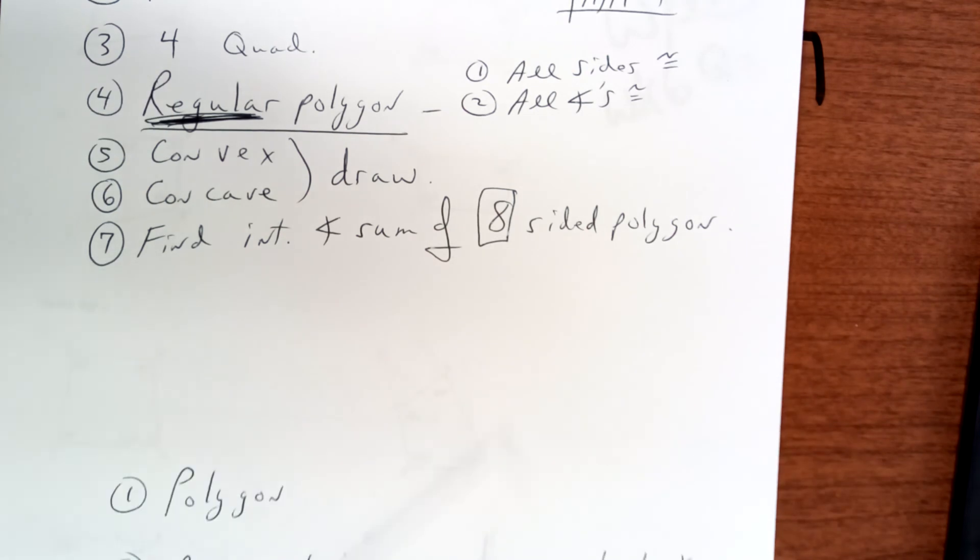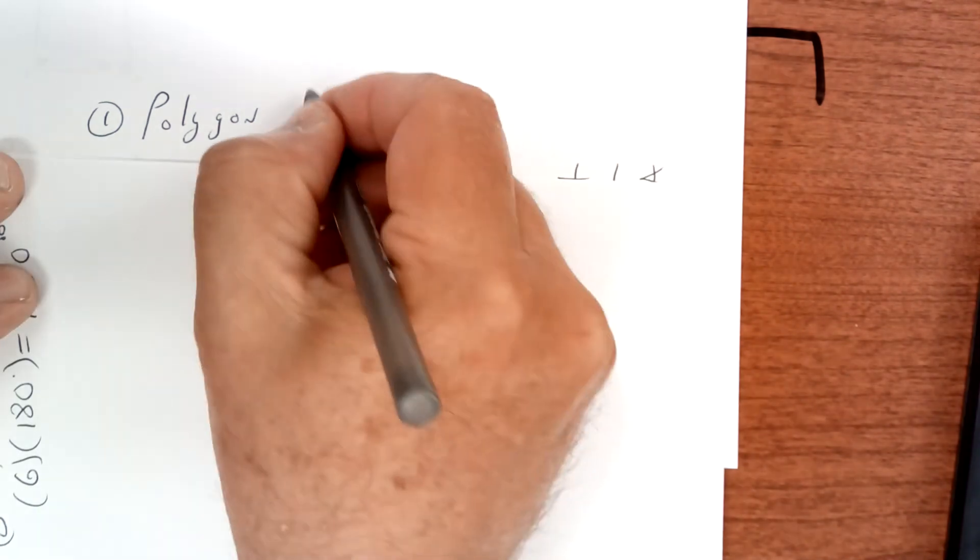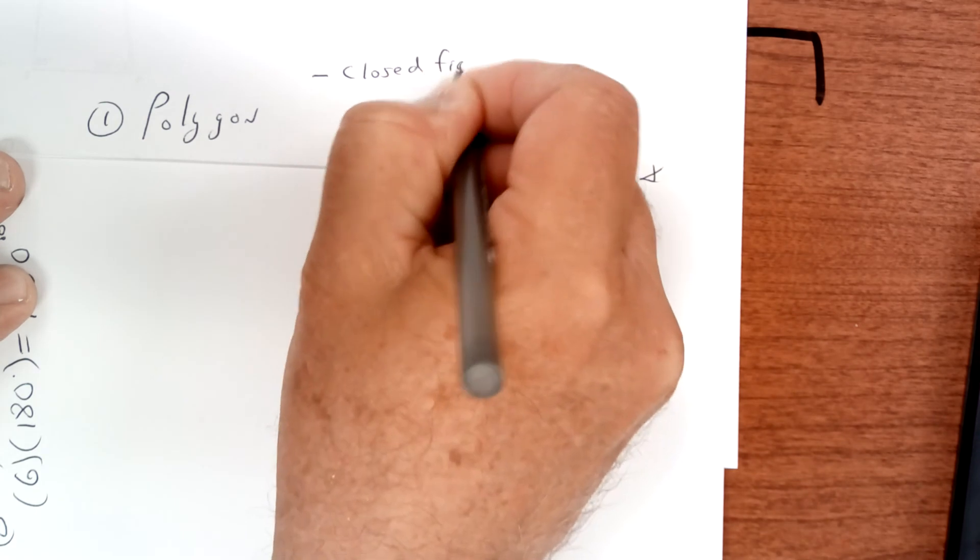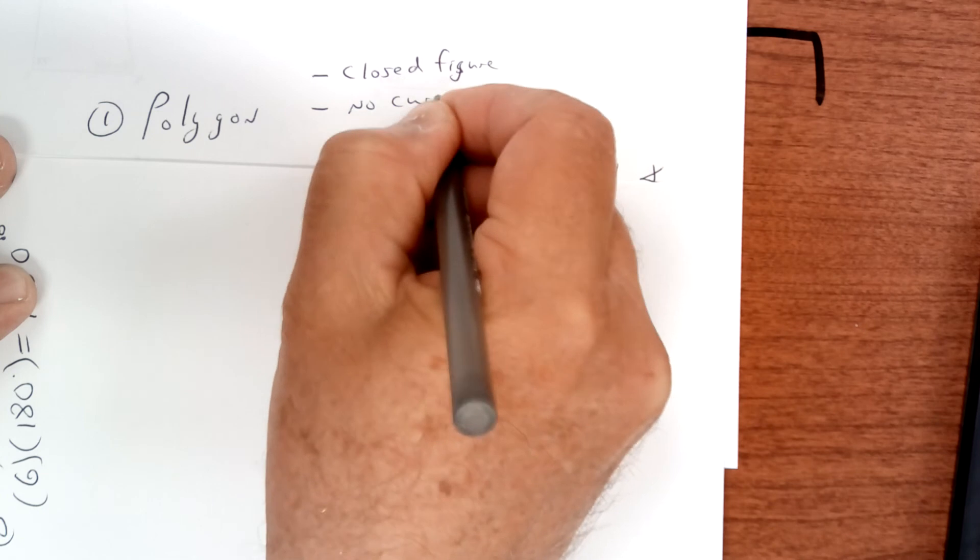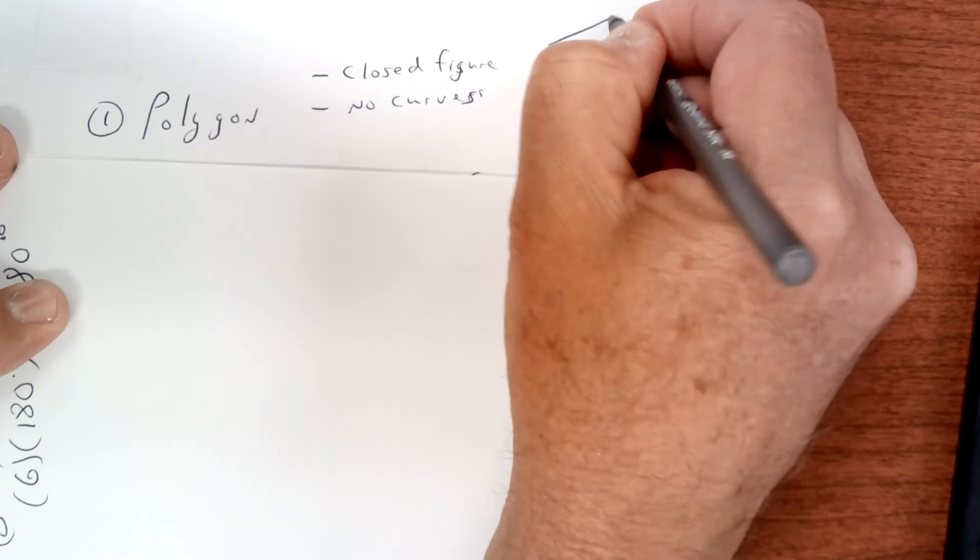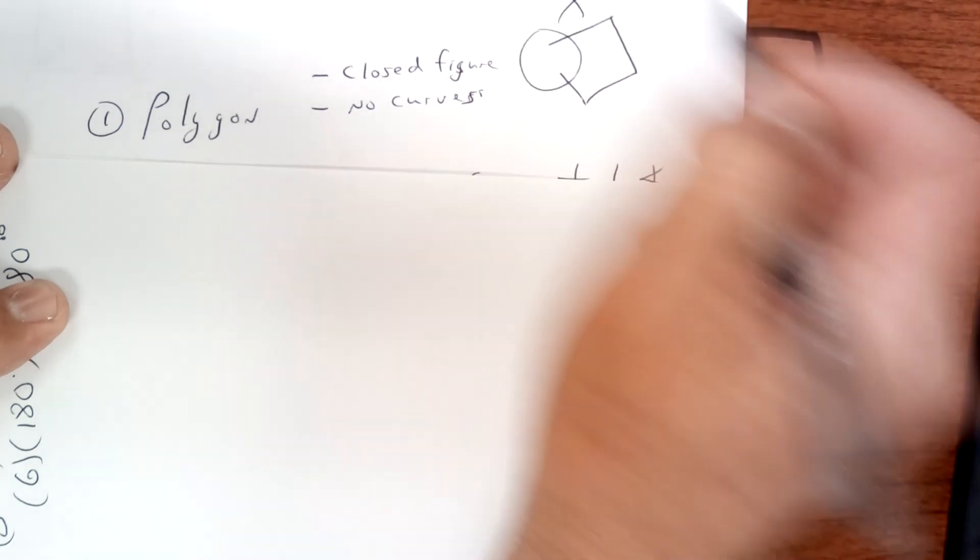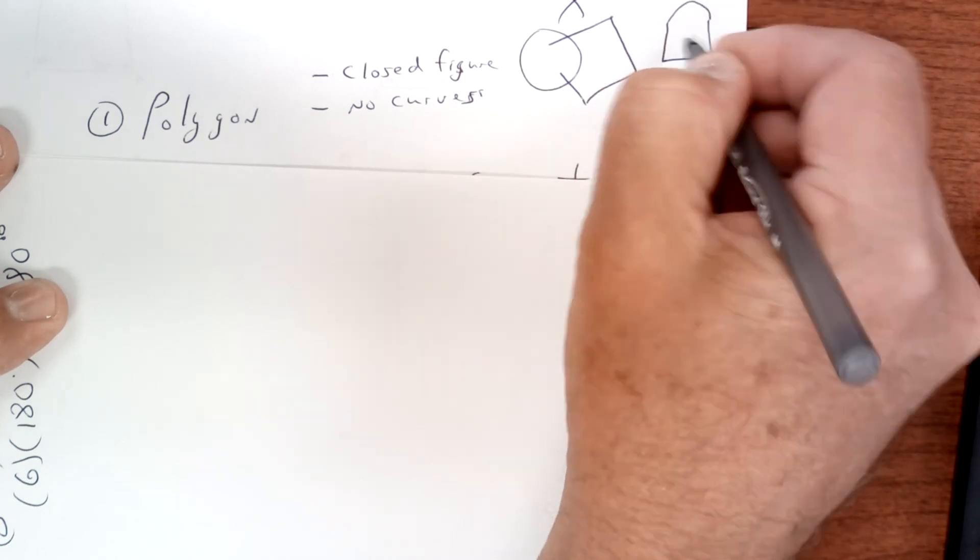Copy this down now. The question might be, what is a polygon? A polygon is a closed figure with no curves. Write that down - a closed figure. So if they give you one like this where it's open, that is not a polygon. If they give you one like this where it curves, that is not a polygon. So it can't be open and you can't have a curve.